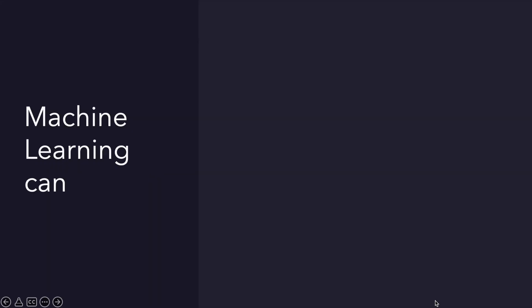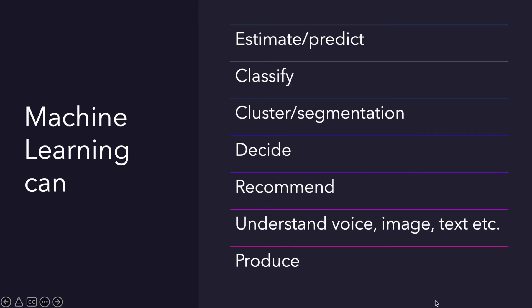We saw different application examples. You can build smart systems thanks to machine learning to estimate, predict, classify, cluster, decide, recommend, understand, produce, and more. And you can use text, image, sound, or HTML files in machine learning.